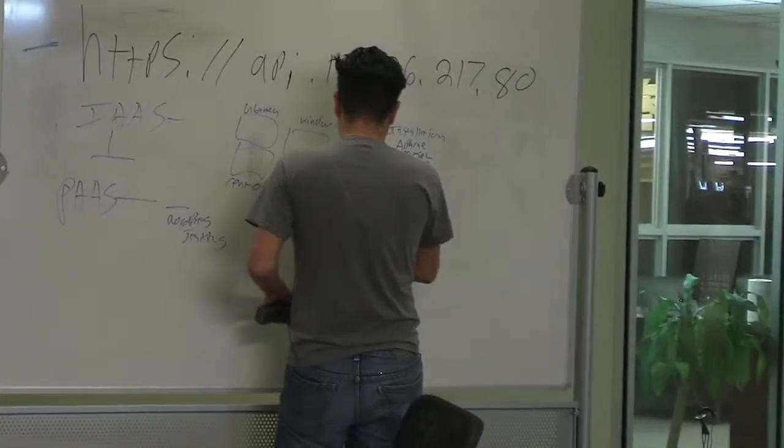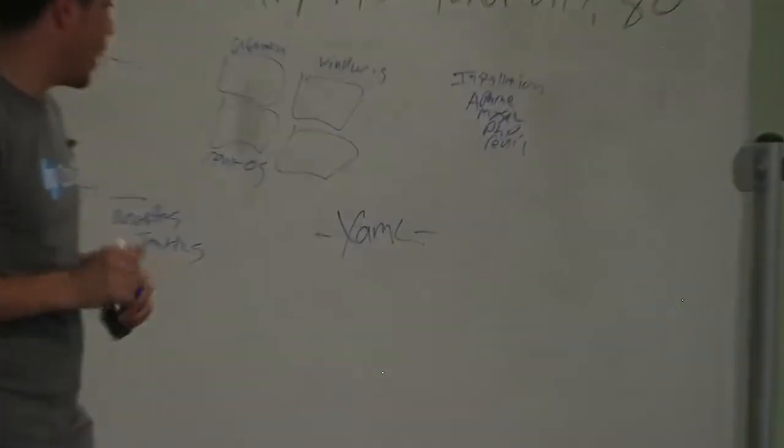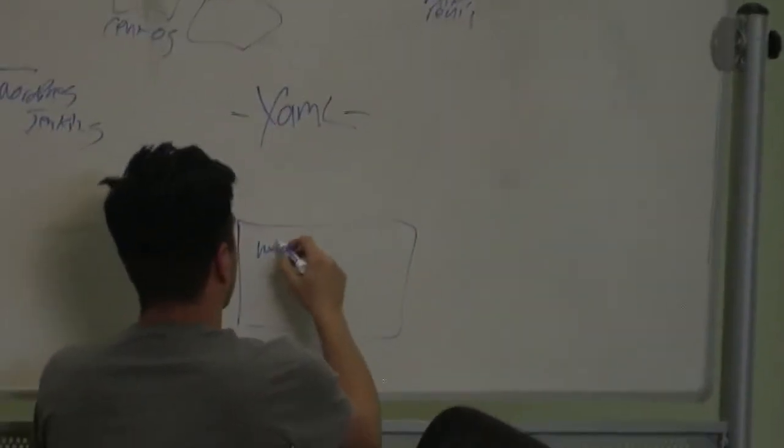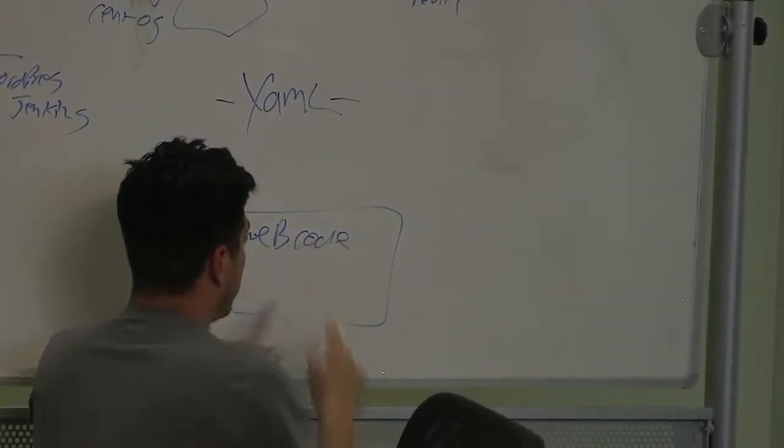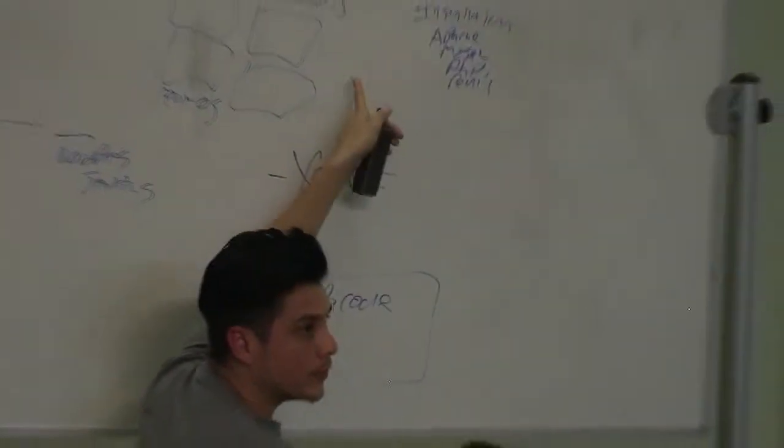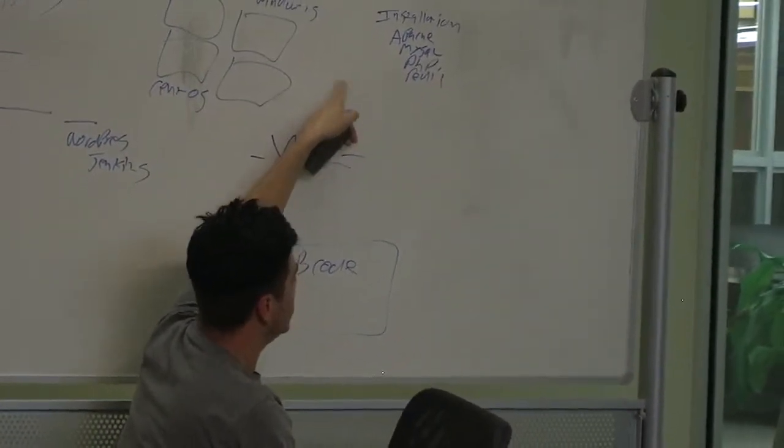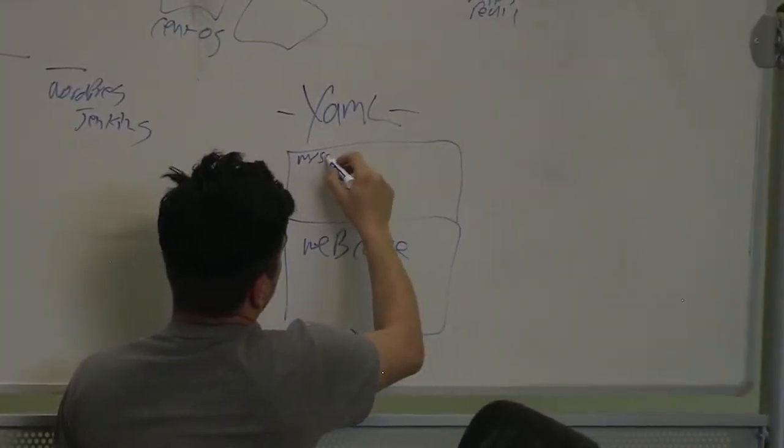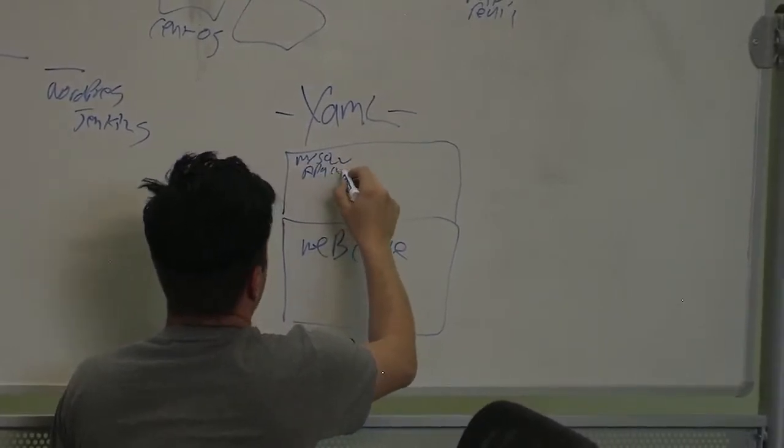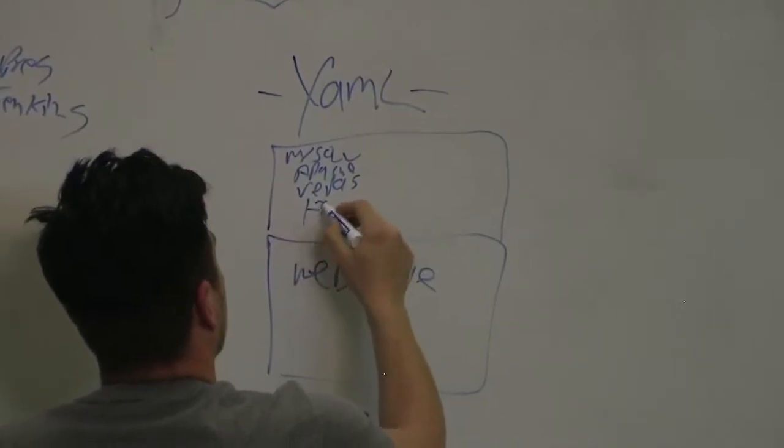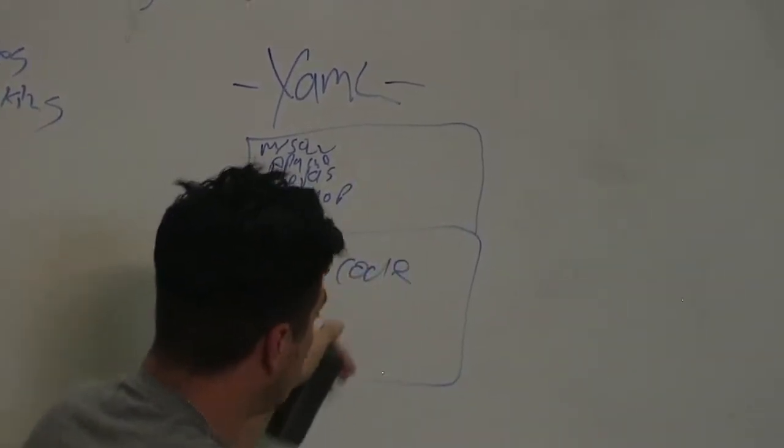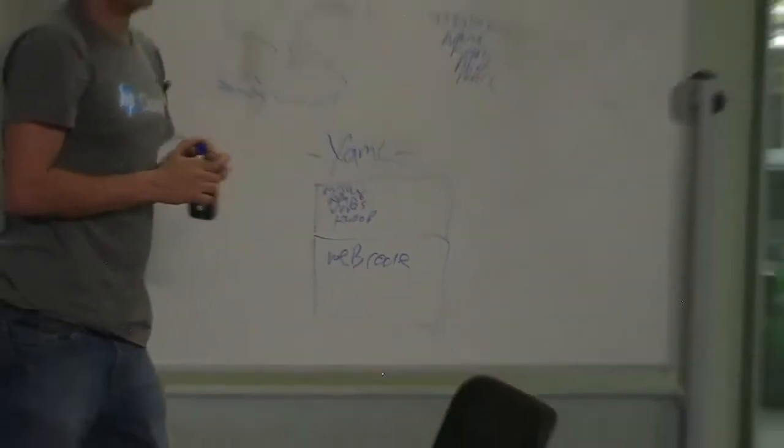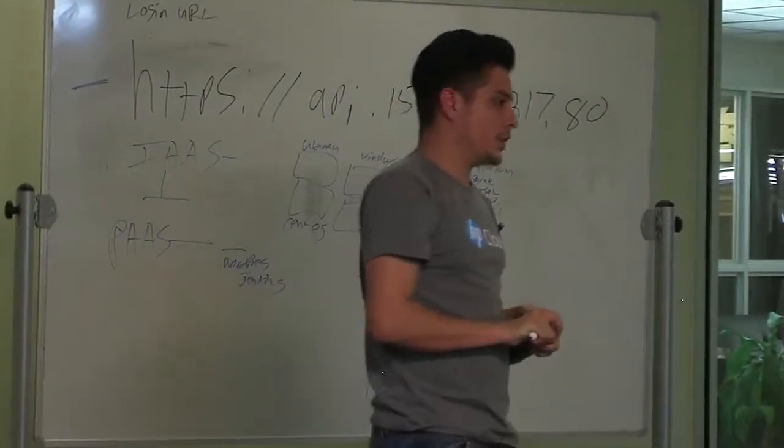What Platform as a Service tries to do at the upper layers is allow you to take what's called a YAML file. It's basically just taking your normal code. This is your web code. You've built a web application. But to deploy that application, you have to go get a server and deploy the services that are needed.